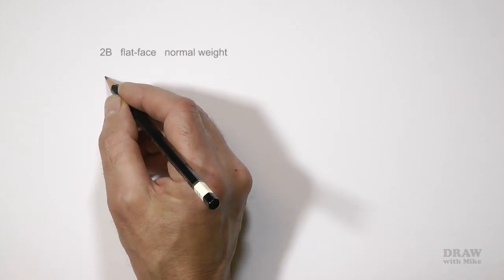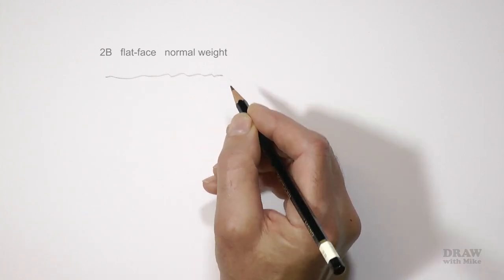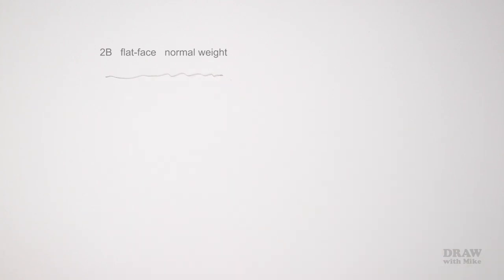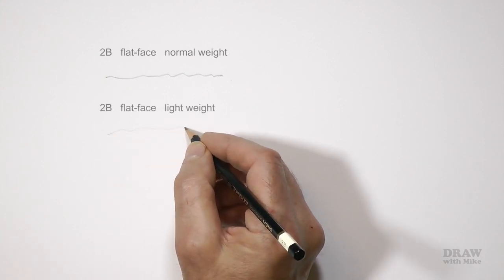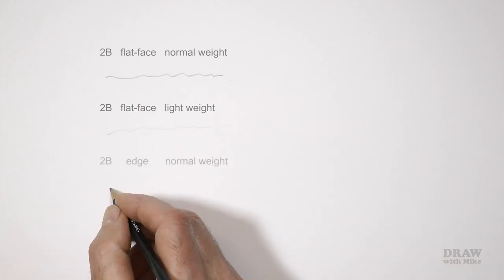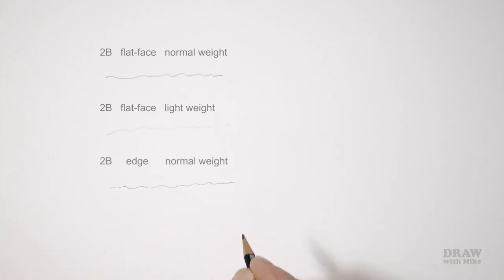Whatever point you choose, experiment to find the varieties of line that each pencil grade can make. This is a 2B using a flat face with normal weight. Weight means how much or little pressure you apply. This is a 2B flat face with light weight, and this is a 2B using the edge of the point with normal weight. And the slight rotation keeps the line sharp unlike a sharp point that blunts quickly.